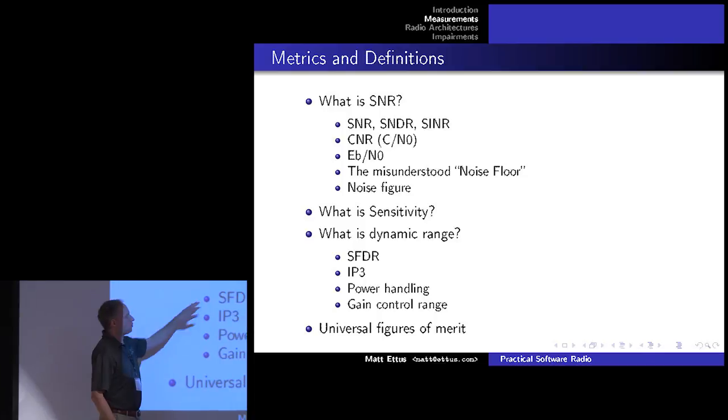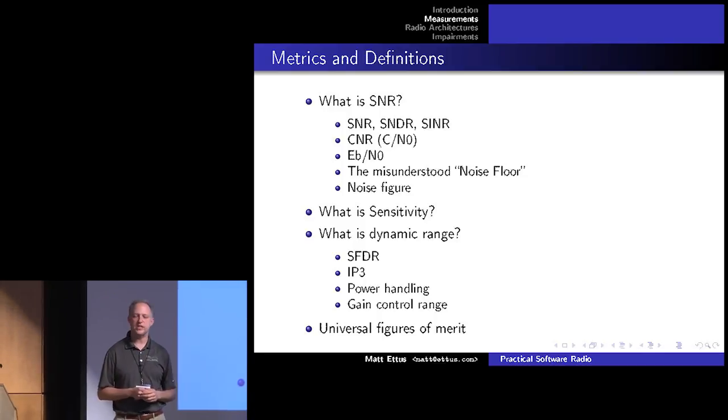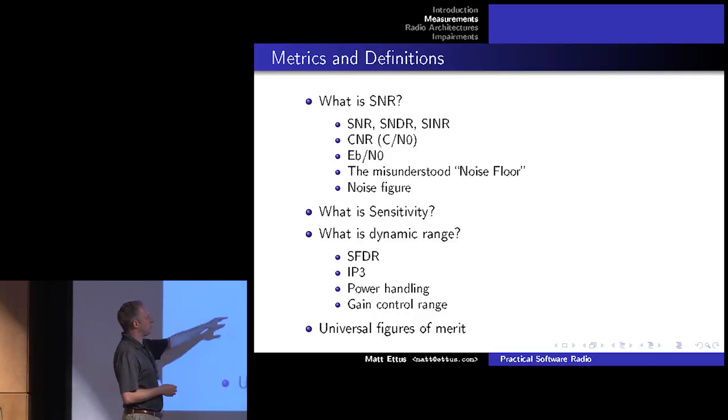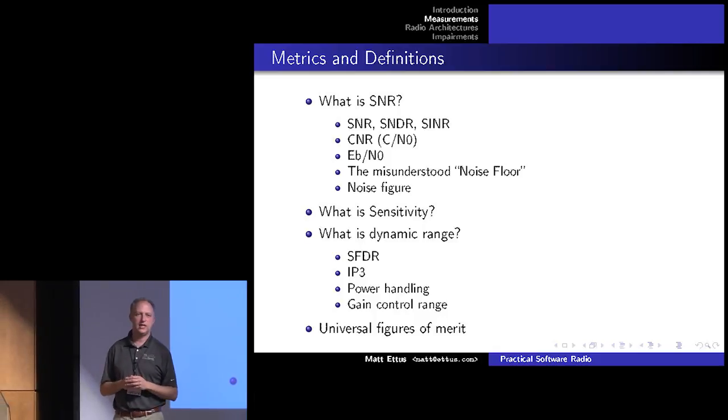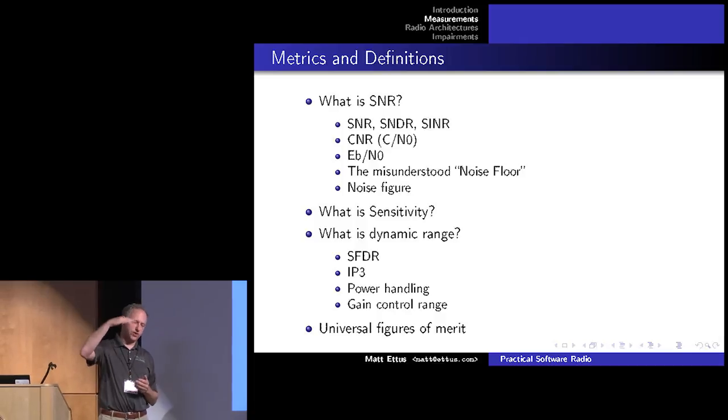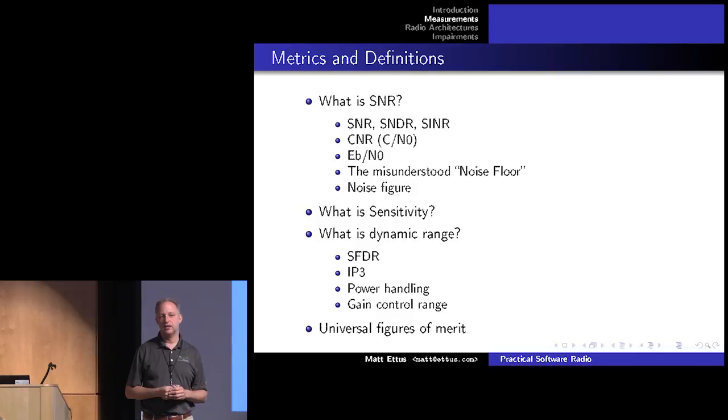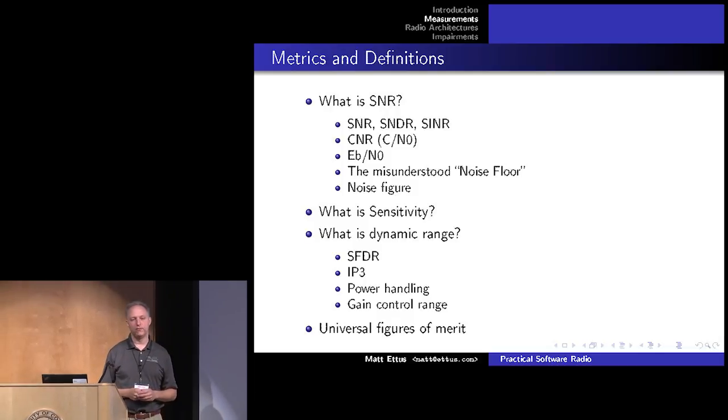One that's useful is the spur-free dynamic range. Although that's typically just of an A to D converter specification or D to A converter. But you can extend it to the radio itself. And so what that says is, let's say you have 100 dB SFDR. It means that when you have a maximum scale signal, that the worst spurs will be 100 dB below that. Now 100 dB would be a good number for an A to D converter.